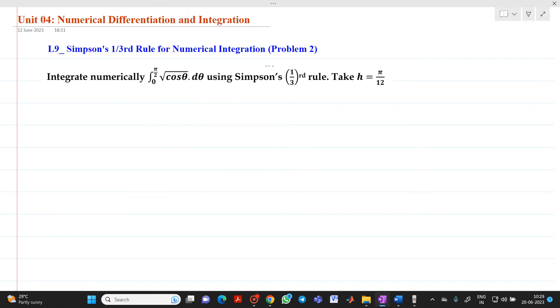We will solve a second numerical based on Simpson's one-third rule. The question is: integrate numerically from 0 to π/2 √(cos θ) dθ using Simpson's one-third rule. Take h equal to π/12.